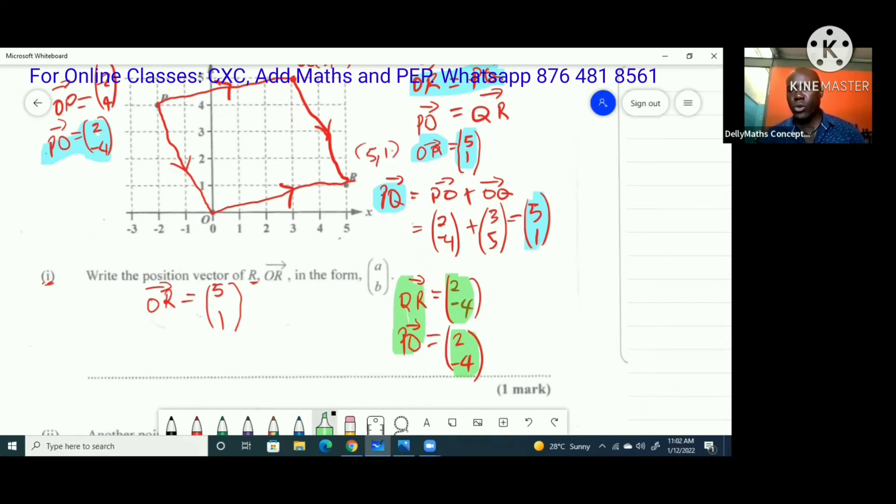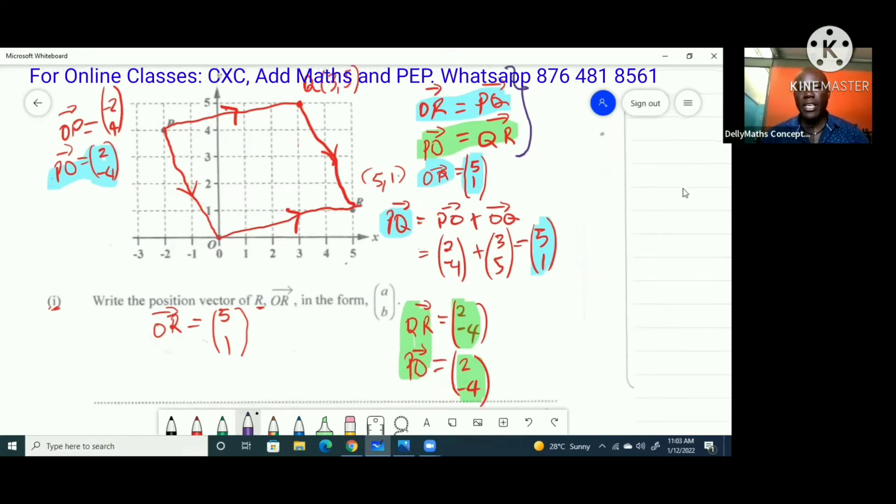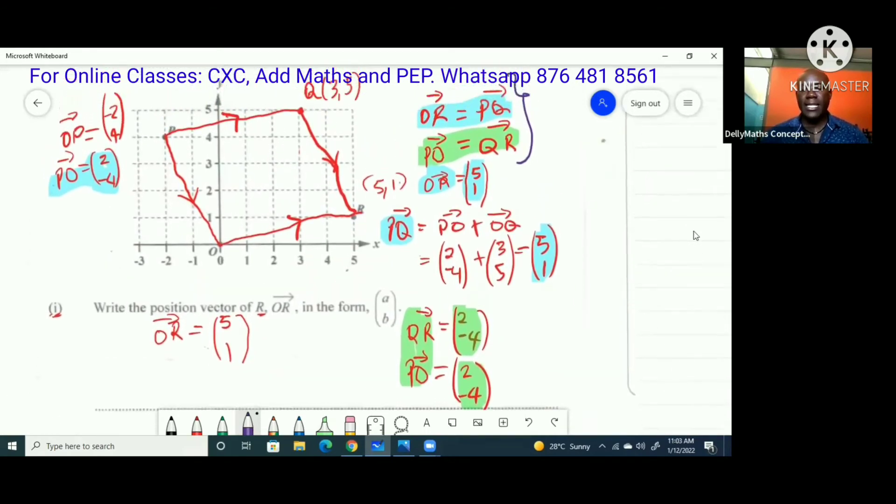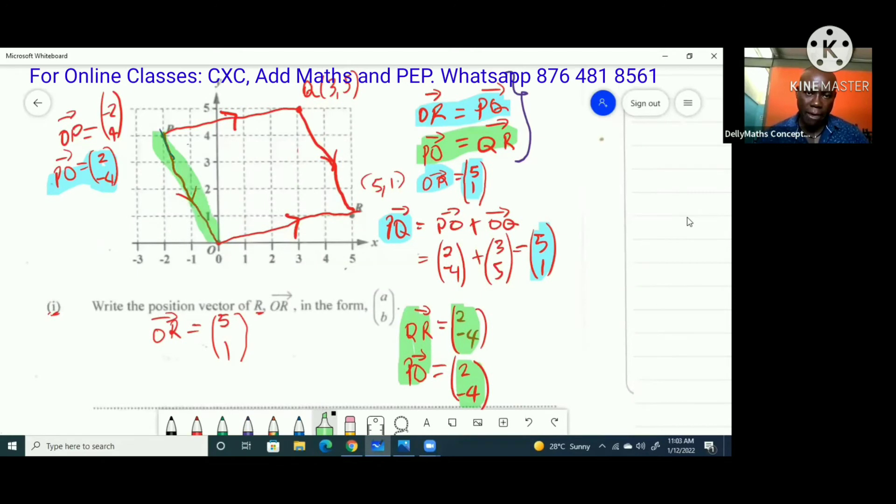And that is all we need to show. We have that OR is equal to PQ, and that vector PO is equal to vector QR. We have just shown that they are equal. The moment they are equal, then we're looking at it and said yes, it's a parallelogram. Opposite sides are equal. That proof would have made it a parallelogram. Now we're dealing with some matrices.